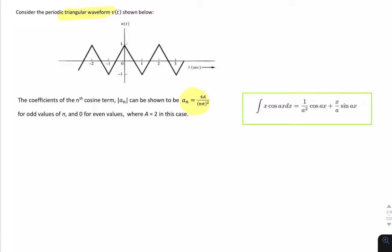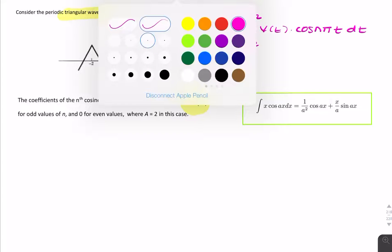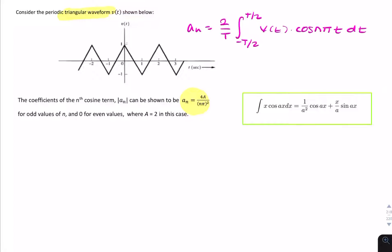So I'll quickly carry out the integration to show you how this is the case. To find the cosine term a n, the expression is a n equals 2 over t integral from minus t over 2 to t over 2, v of t times cosine n pi t dt. To carry out the integration we need to know what v of t is, we need to know what the period t is, and we need to know what omega 0 is. Once we have those three things, we can carry out the integration.